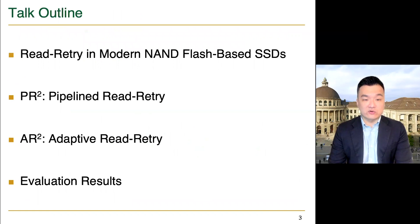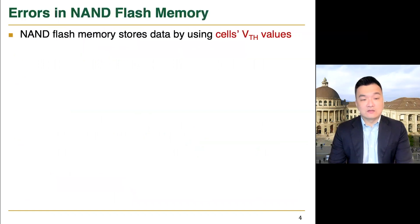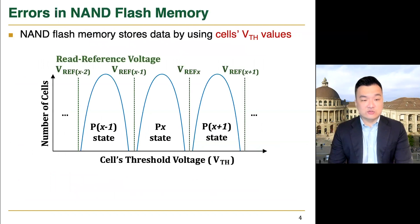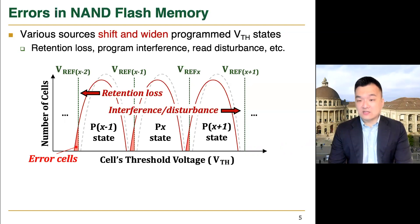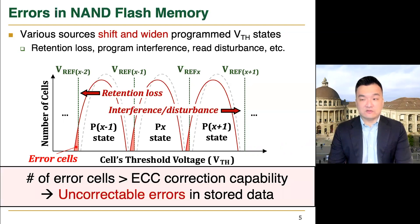I'll start with a brief overview of read retry. NAND flash memory stores data by adjusting a cell's threshold voltage values. This figure shows a part of the threshold voltage distribution of a page, where each threshold voltage state can be distinguished by using the corresponding read reference voltage values. Various error sources shift and widen the threshold voltage states. If a cell's threshold voltage value moves beyond the corresponding read reference voltage, reading the cell increases an error.